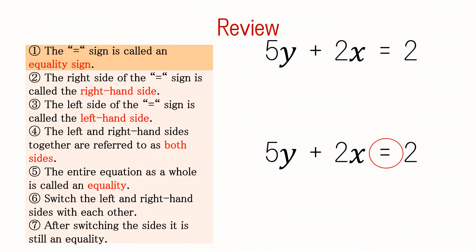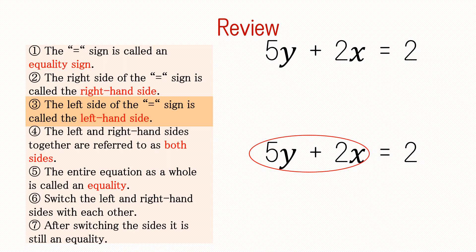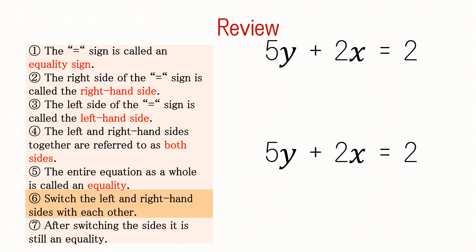Finally, let's review what we have learned. The symbol circled in red is called an equal sign. The right side is called the right-hand side, and the left side is called the left-hand side. Together they are referred to as both sides, and the entire equation as a whole is called an equality. After switching the sides, it is still an equality.